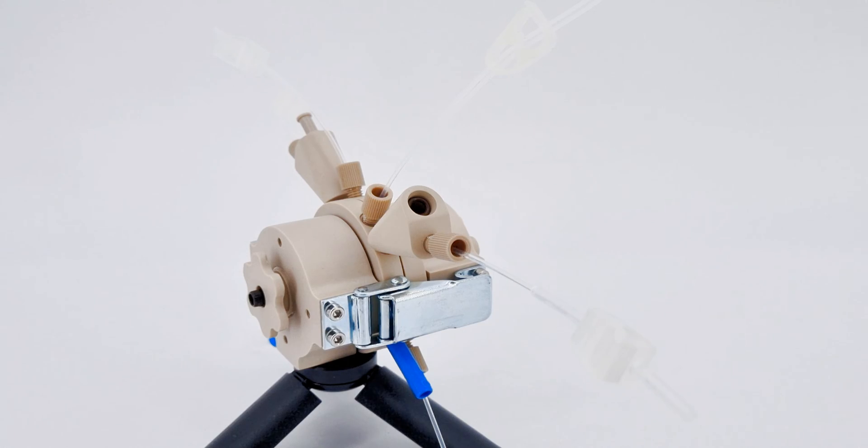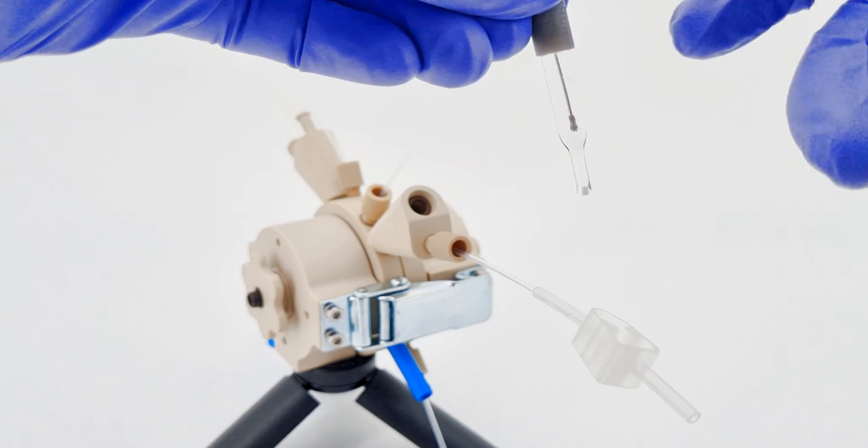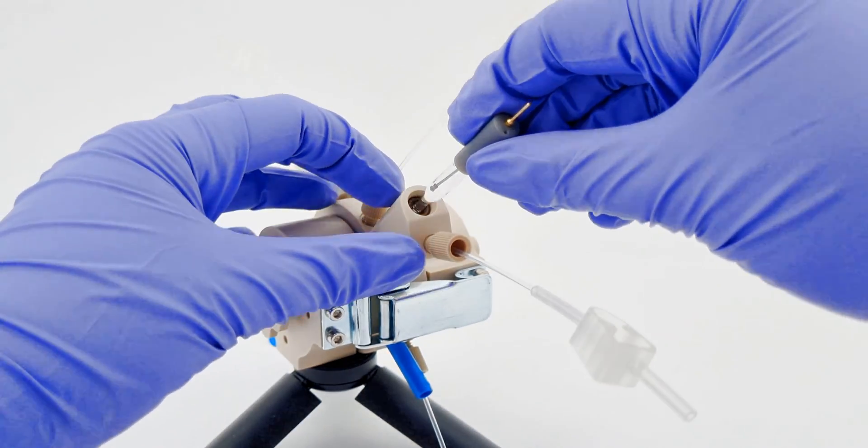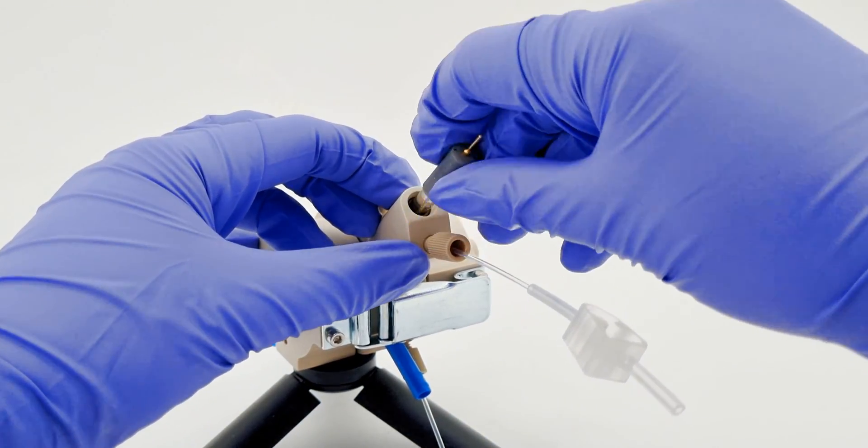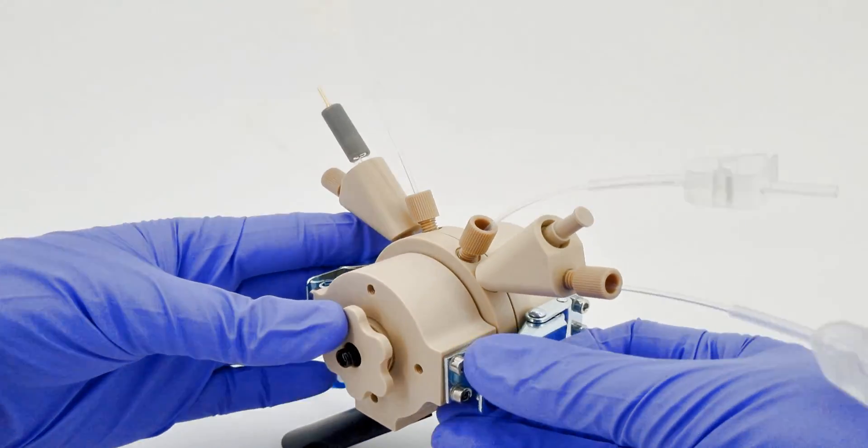Next, take the cap off the reference electrode and give it a gentle tap. This will get rid of any sneaky bubbles hiding by the frit. Lastly for this step, with a bit of a twist, push the reference electrode into its holder.